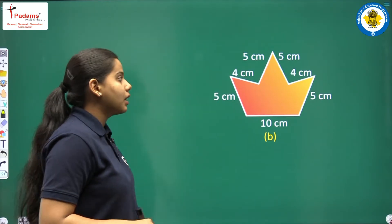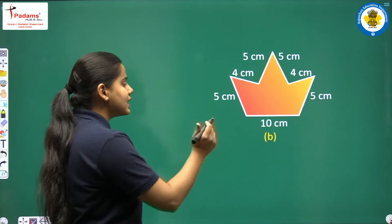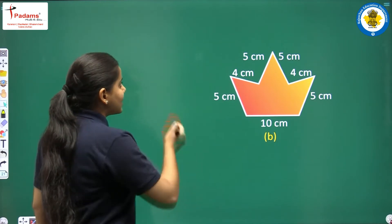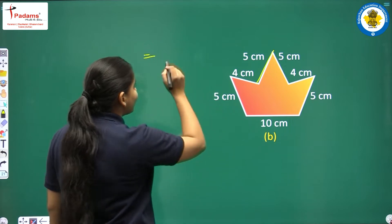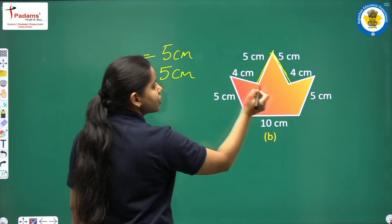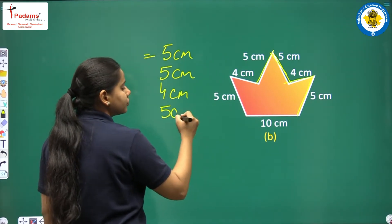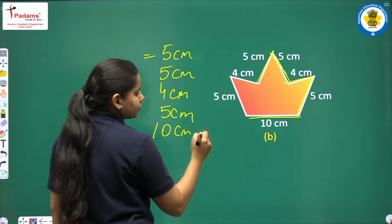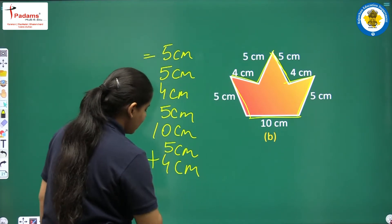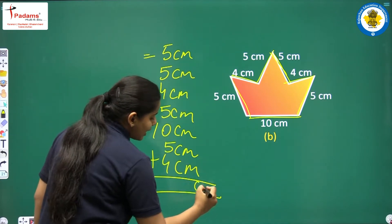Now let's move on to the next one — part B. Here also we have one irregular shape, and the length of every side is given. We have to total all the lengths to find the perimeter. The sides are: 5 cm, then 5 cm, then 4 cm, then 5 cm, then 10 cm, then 10 cm, then 5 cm, then 4 cm. We will calculate the perimeter by adding all these lengths.